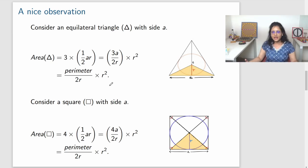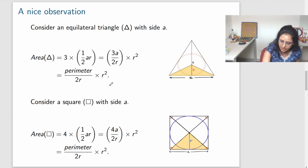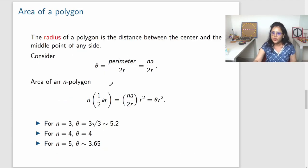Now we see, I can do this for any polygon with any number of sides. If I have an N polygon, which is like N gon with N sides, then I can divide it into N smaller triangles with base A and height R. So the area would be N times half AR. So I can write it as theta R square, where theta is perimeter divided by 2R. And I want to mention here that this is the first definition of pi.